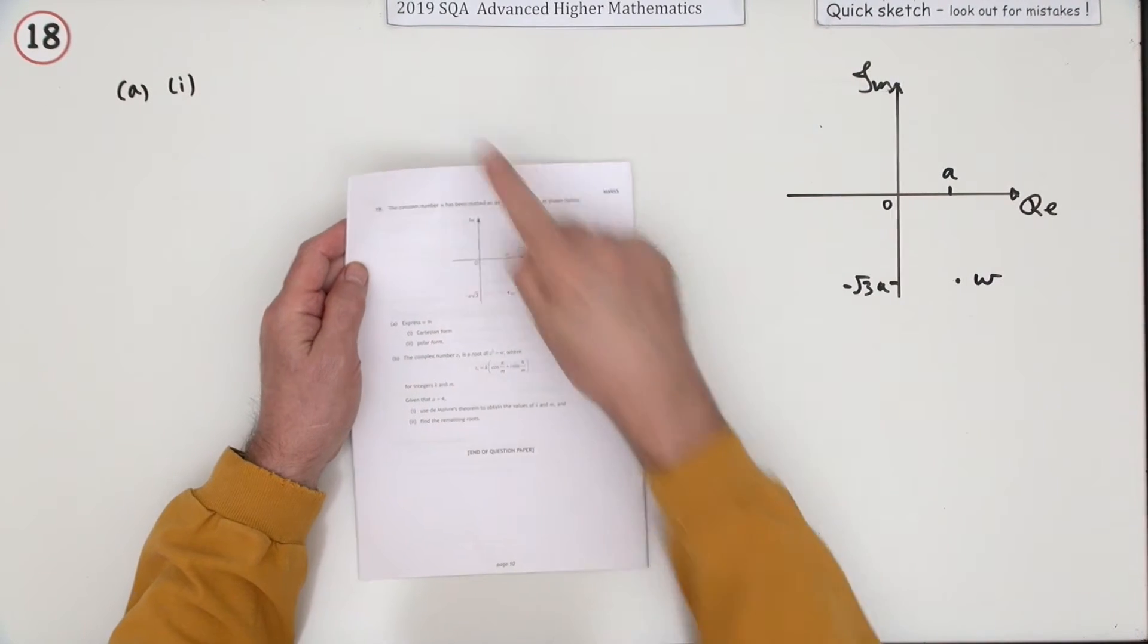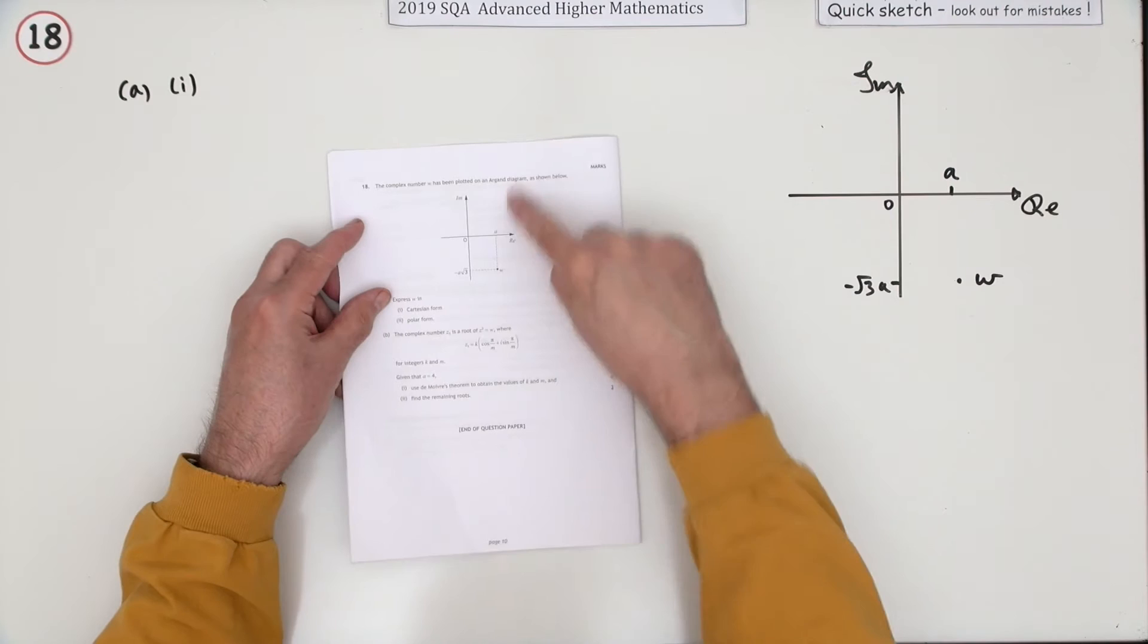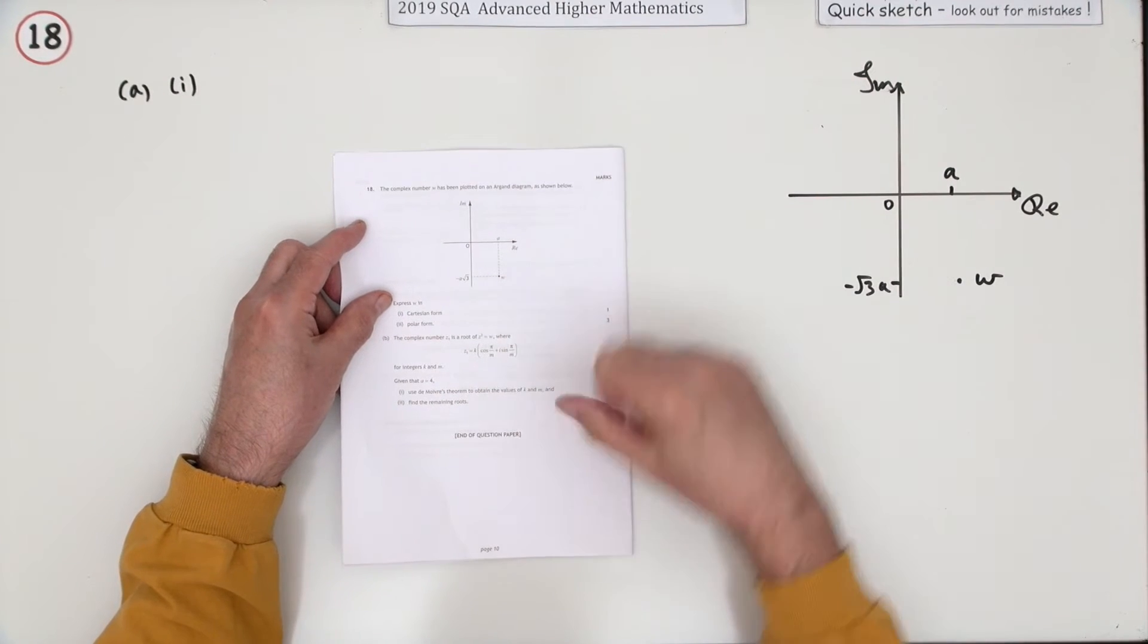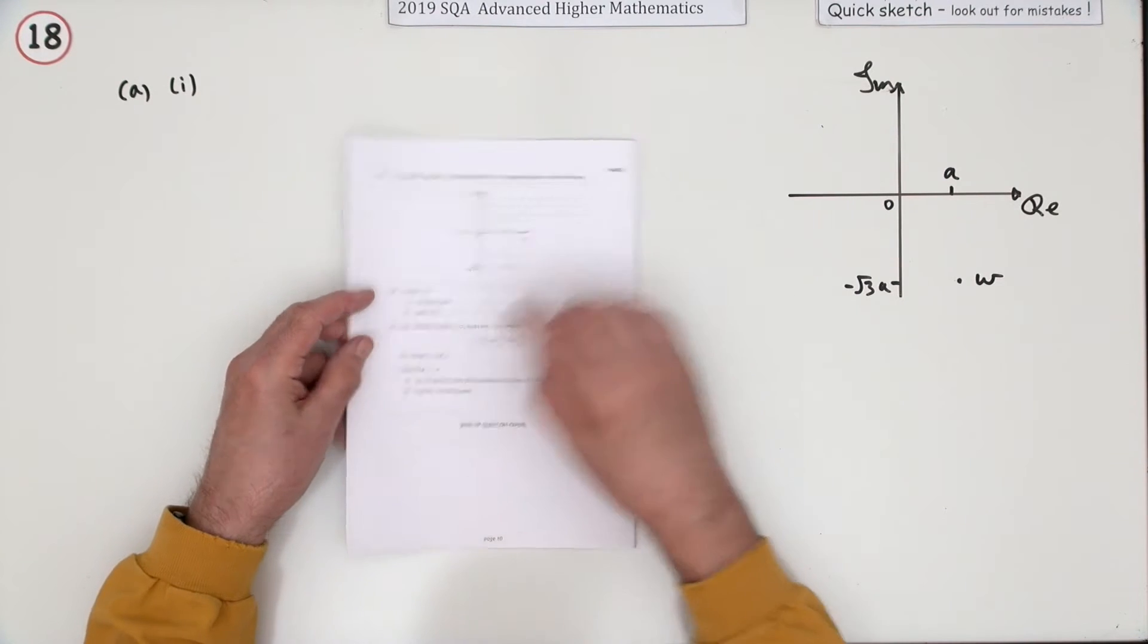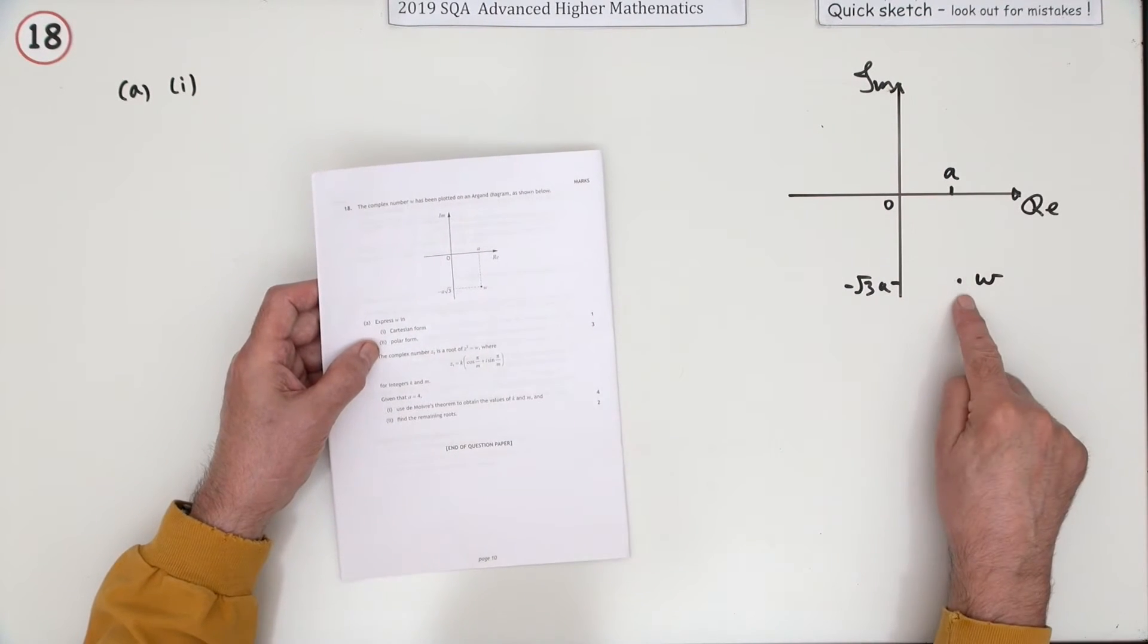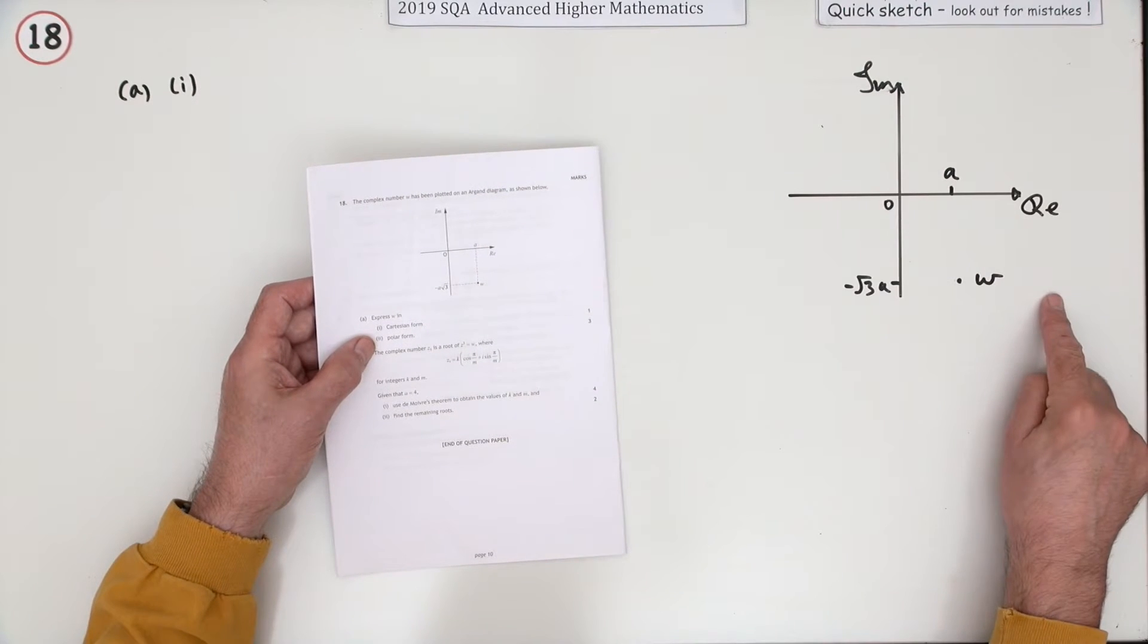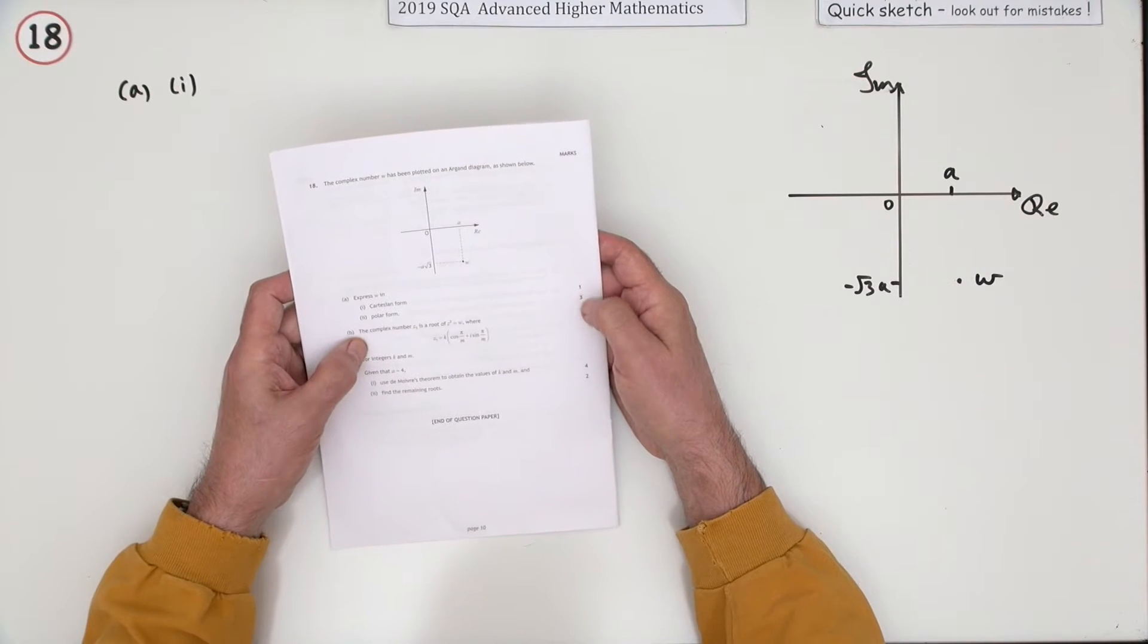Number 18, the last question. The 2019 Advanced Higher Maths complex numbers question - the whole ten marks is about finding the roots of a complex number, specifically the third roots. How does it start off? You're showing this complex number on an Argand diagram, and you have to express it in two ways for four marks.